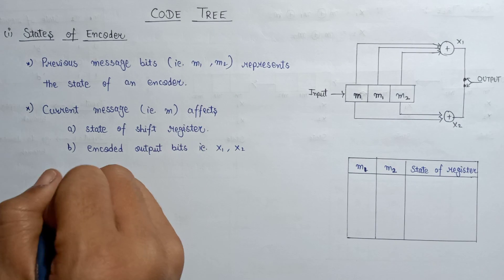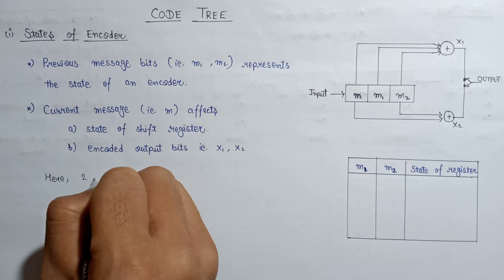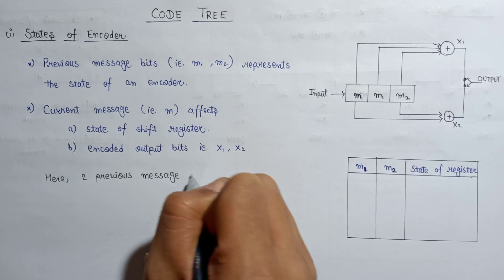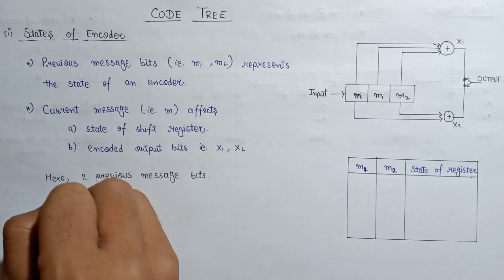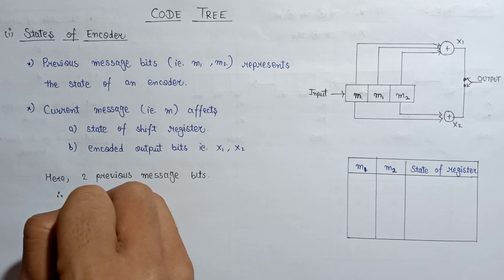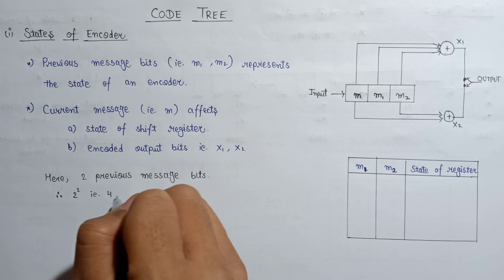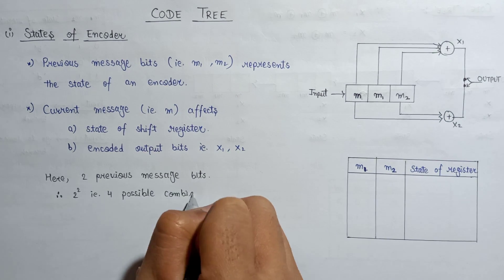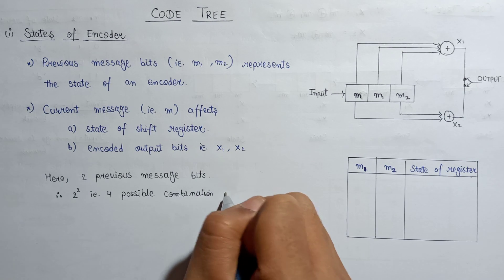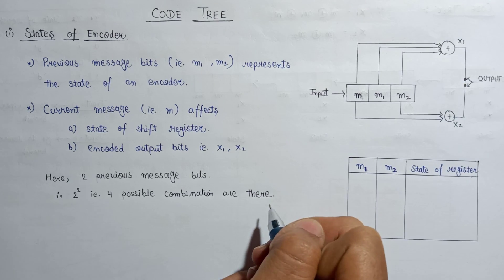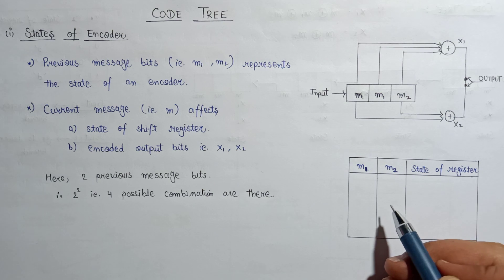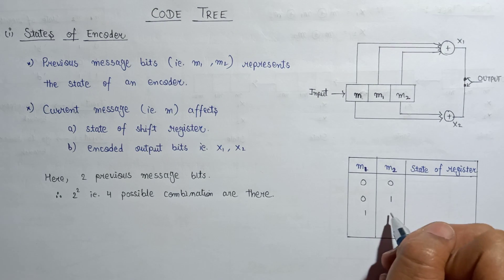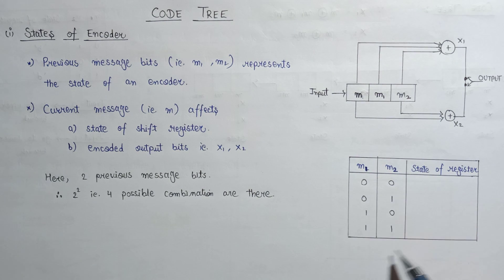Now we know that there are two previous message bits. That is why the total number of combinations possible will be equal to 2 raised to 2, that is 4. So there are 4 possible combinations based on the values of m1 and m2, starting from 00, 01, 10, and finally 11.